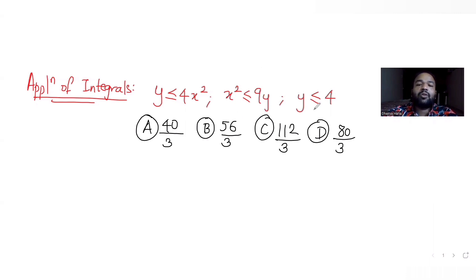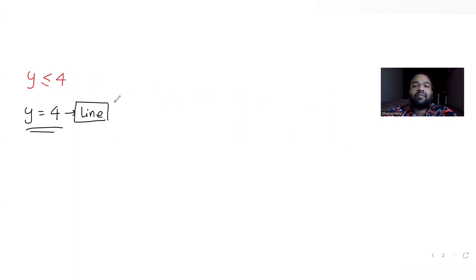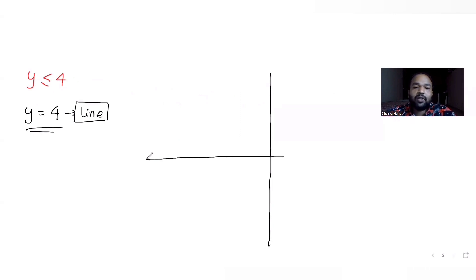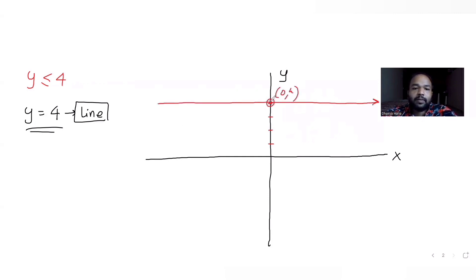Let's figure out these areas. If I remove the inequality from y ≤ 4 and put it equal, I get the equation of a line. Let me draw the regions — this is the y-axis and this is the x-axis. If I draw a line parallel to the x-axis, y = 4, this is the point 0 comma 4.